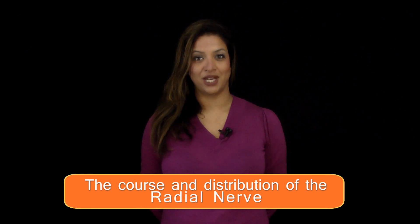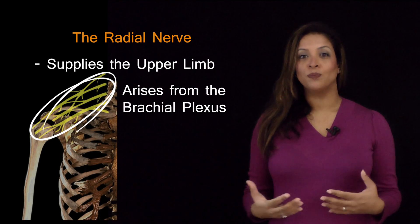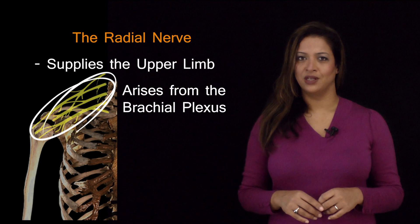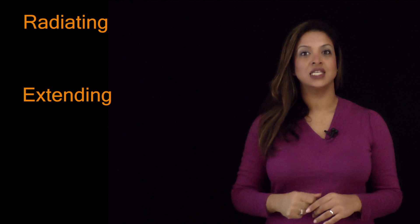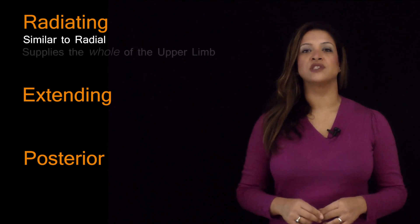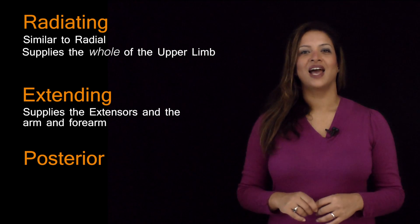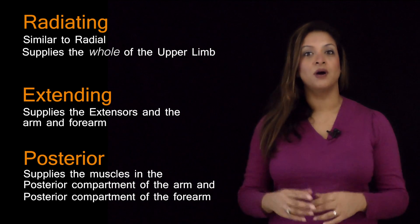In this tutorial I'm going to cover the course and the distribution of the radial nerve. The radial nerve is one of the nerves that supplies the upper limb, arising from the brachial plexus. To remember what it does, I think of three words: radiating — because it supplies the whole upper limb; extending — because it supplies the extensors in the arm and forearm; and posterior — because it supplies muscles in the posterior compartment of the arm and forearm.